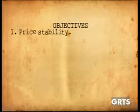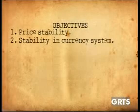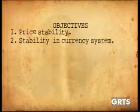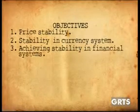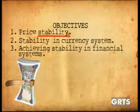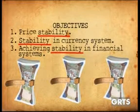The legal mandate of the Central Bank of the Gambia is derived from the Central Bank of the Gambia Act 2005. The primary objects of the Central Bank are: one, maintaining price stability; number two, maintaining stability in the currency system of the country; and number three, achieving stability in the financial system.